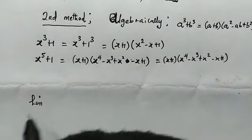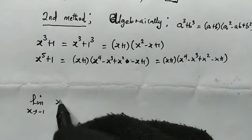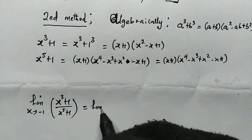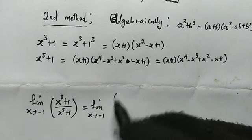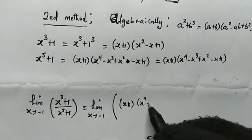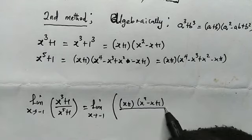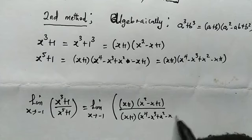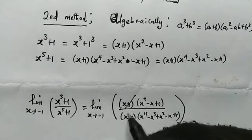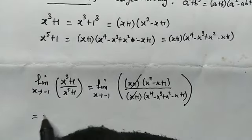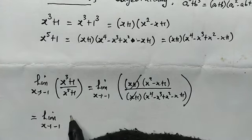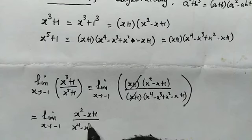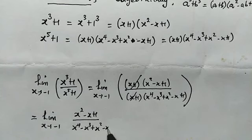So our limit as x is approaching negative 1 of x cubed plus 1 divided by x to the power of 5 plus 1 becomes the limit as x is approaching negative 1 of (x plus 1)(x squared minus x plus 1) divided by (x plus 1)(x to the power of 4 minus x cubed plus x squared minus x plus 1). We have a nice cancellation of (x plus 1), leaving the limit of (x squared minus x plus 1) divided by (x to the power of 4 minus x cubed plus x squared minus x plus 1).